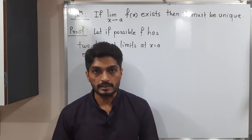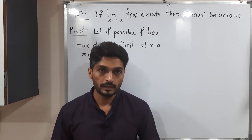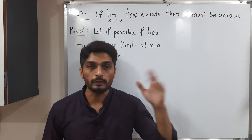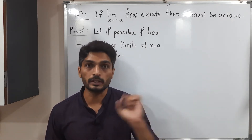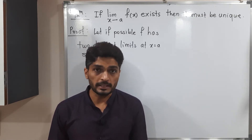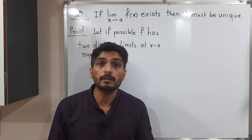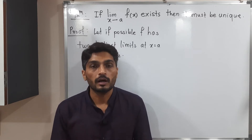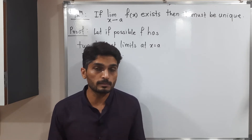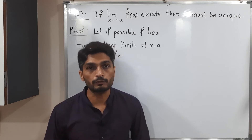Let us discuss this very important result: if a limit exists, then it is unique. That means the limit has a unique value — 2, 3, or whatever it may be — but it is unique. There will not be any two distinct values. To prove this, in mathematics we assume exactly the opposite and solve until we get a contradiction, then we rectify our assumption to get the required result.